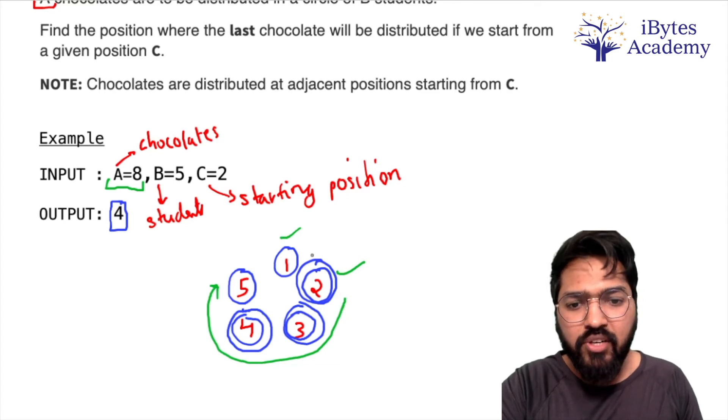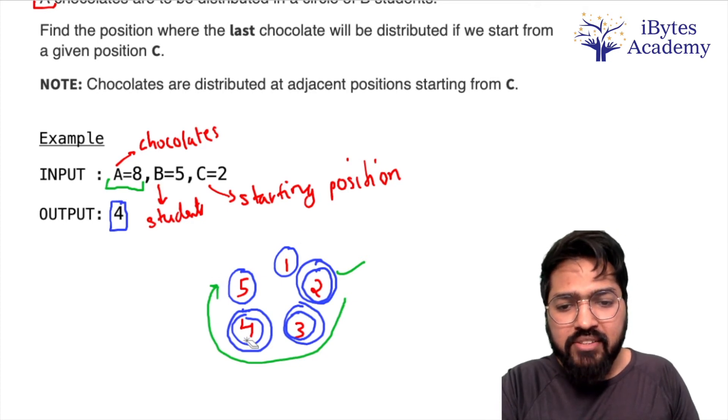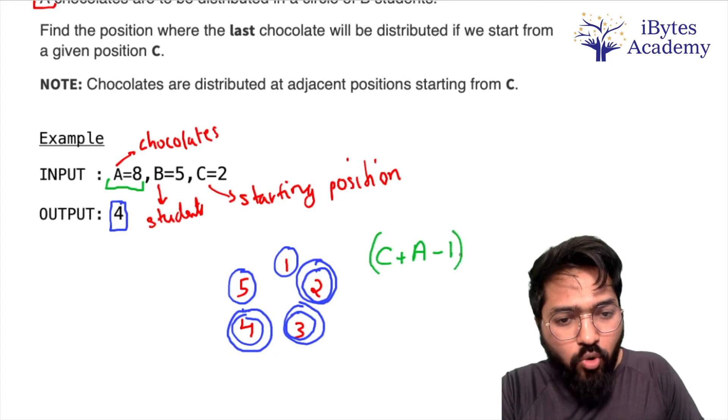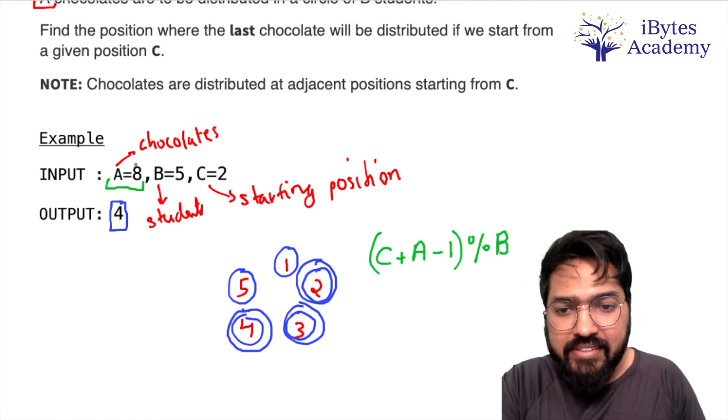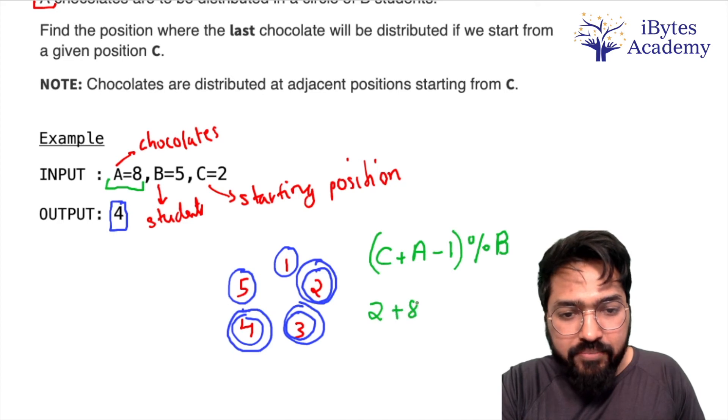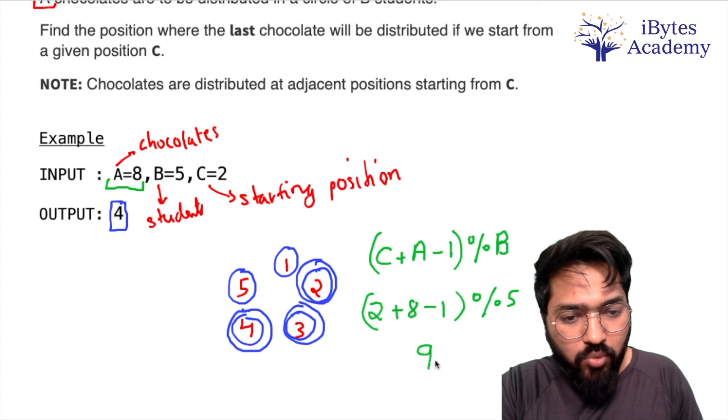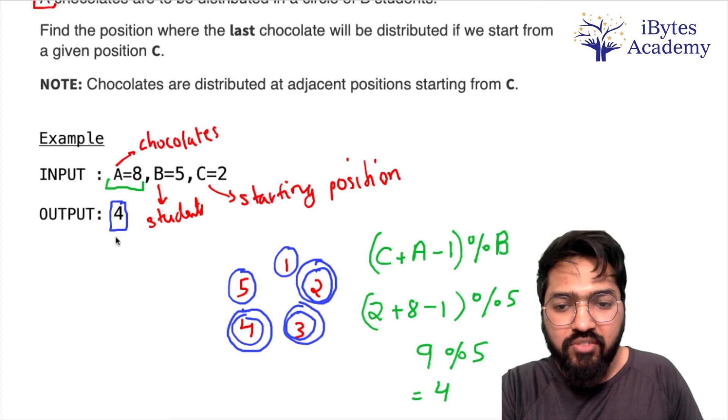But we can also solve this problem without using a loop. Simple mathematics se hum log solve kar sakte hain: starting position that is C plus number of chocolates that is A minus 1 modulo B. This is going to give me my answer. Let's see: 2 plus 8 minus 1 modulo 5, so 9 modulo 5 is going to give me 4, which is our output.